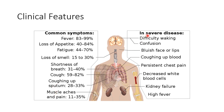In severe disease the following clinical features can be seen: difficulty waking, confusion, bluish face or lips, coughing up blood, persistent chest pain, decreased white blood cells, kidney failure, and high fever.